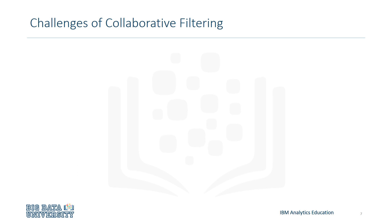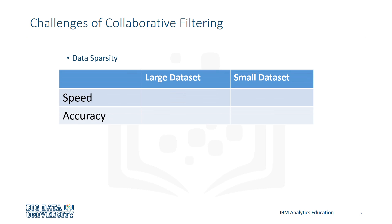There are some challenges with collaborative filtering. One of them is data sparsity. Having a large dataset will most likely result in a user-item matrix being large and sparse, which may provide a good level of accuracy, but also pose a risk to speed. In comparison, having a small dataset would result in faster speeds, but lower accuracy.